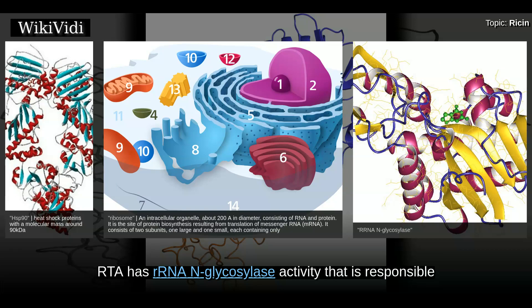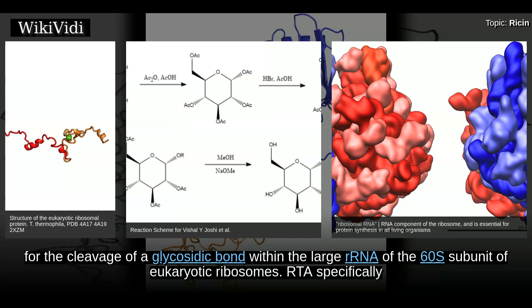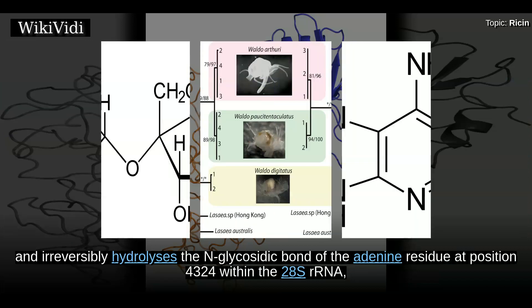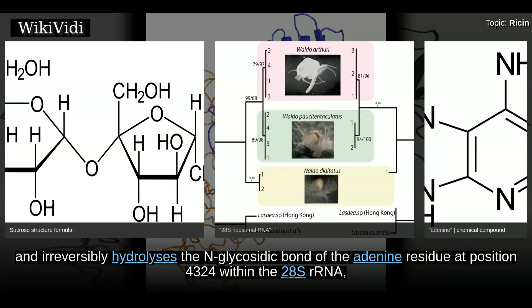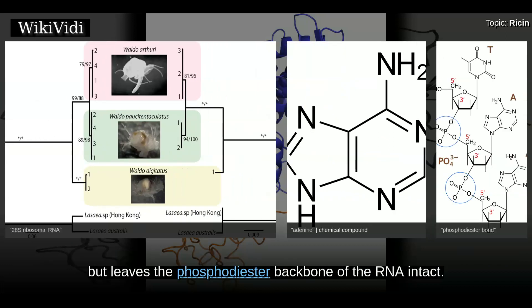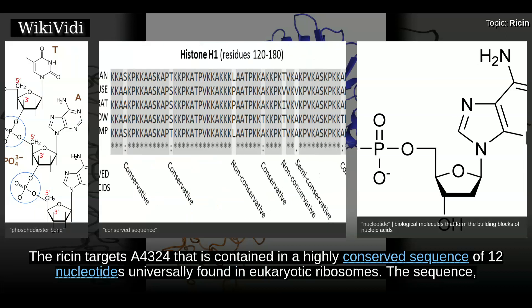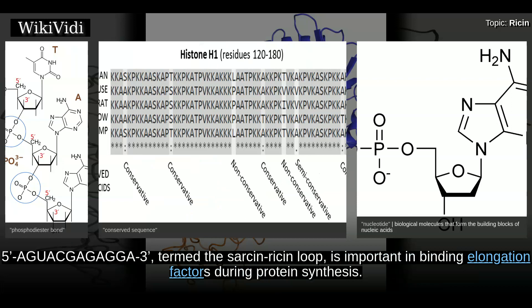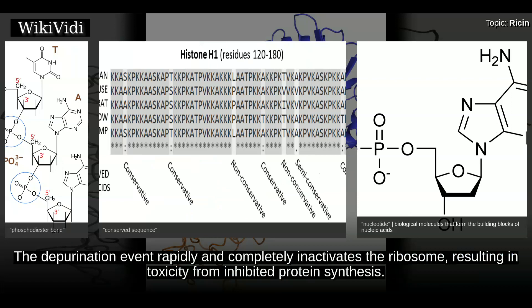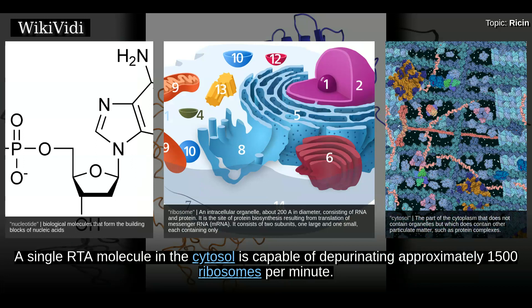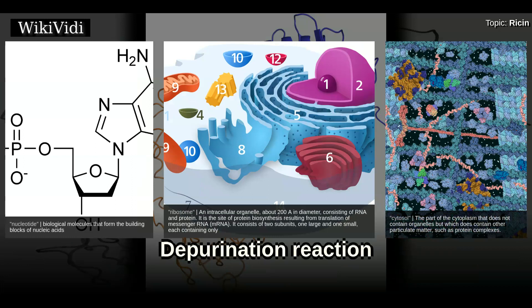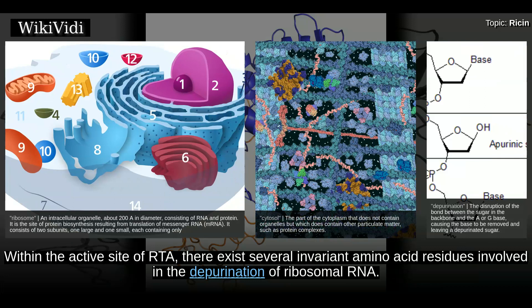RTA has N-glycosylase activity responsible for the cleavage of a glycosidic bond within a large RNA of the 60S subunit of eukaryotic ribosomes. RTA specifically and irreversibly hydrolyzes the N-glycosidic bond of the adenine residue at position 4324 within the 28S rRNA, but leaves the phosphodiester backbone of the RNA intact. The ricin target A4324 is contained in a highly conserved sequence of 12 nucleotides universally found in eukaryotic ribosomes. The sequence 5′-AGUAGAGA-3′, termed the sarcin-ricin loop, is important in binding elongation factors during protein synthesis. The depurination event rapidly and completely inactivates the ribosome, resulting in toxicity from inhibited protein synthesis. A single RTA molecule in the cytosol is capable of depurinating approximately 1,500 ribosomes per minute.